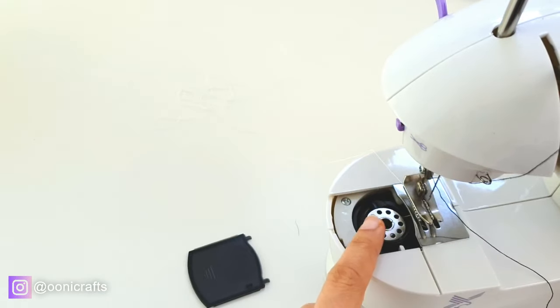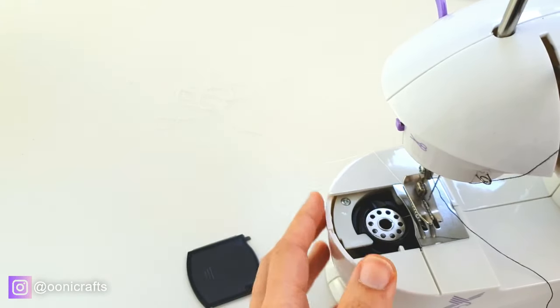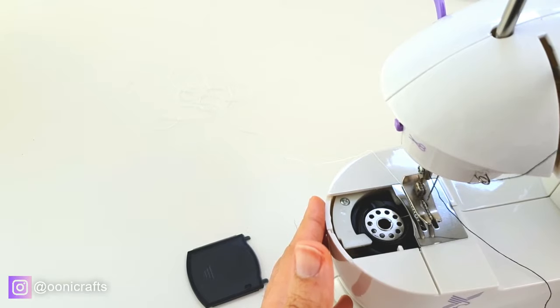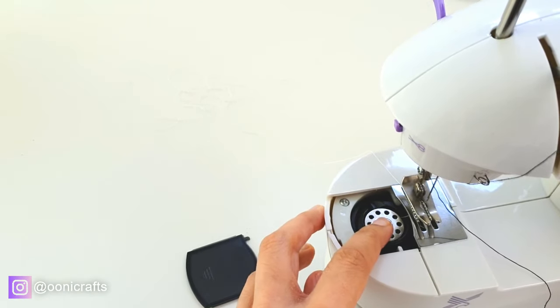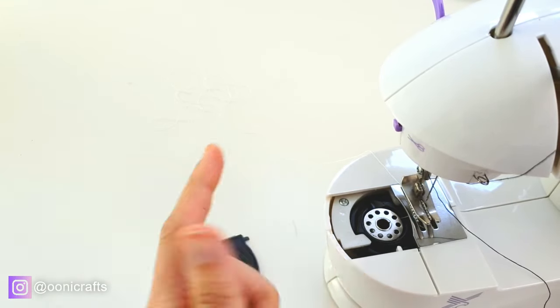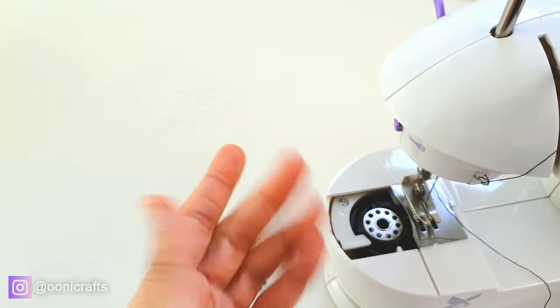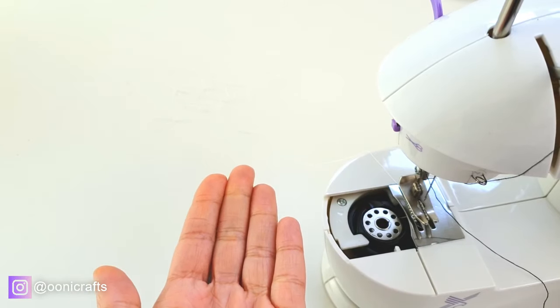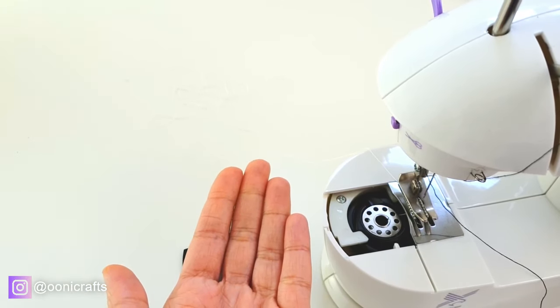So remember, when you're threading your bobbin, follow the Nifty 9 method, which is to make a figure 9 with your bobbin, and then it should be fine. If you put it the other way, making the letter P, the bobbin is going to bounce up, and the casing is going to bounce up. And that's going to mess up your sewing.